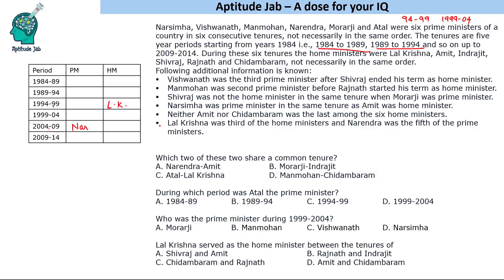Narendra was the fifth prime minister, so he served from 2004 to 2009. Now connecting the Vishwanath clue: Vishwanath was the third prime minister after Shivaraj ended his term as home minister. If Shivaraj was home minister in tenure 1, Vishwanath would be PM in tenure 4; if in tenure 2, Vishwanath would be in tenure 5 — but that's not possible since Narendra is PM in tenure 5. If Shivaraj was in tenure 3, Vishwanath would be in tenure 6, but Lal Krishna was home minister in tenure 3, so the only possibility is Shivaraj in tenure 1 and Vishwanath in tenure 4.